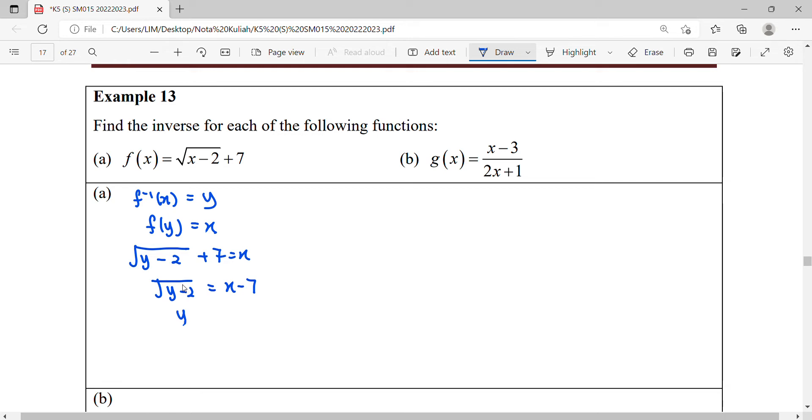Then move the square to the right hand side—square root becomes square on the right hand side. Then y will become (x minus 7) squared plus 2. So finally, this is our f inverse.